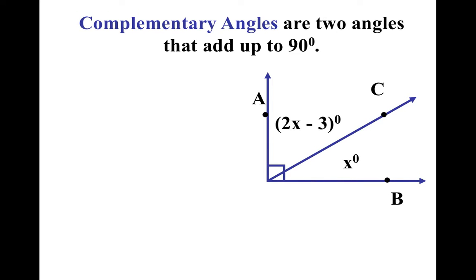Well, I'll let you guys try this one. I'll help you by setting up the equation. Notice angle number 1: 2x minus 3, 2x plus negative 3. Angle number 2: x. And we know, because of this box, that they equal 90 degrees.